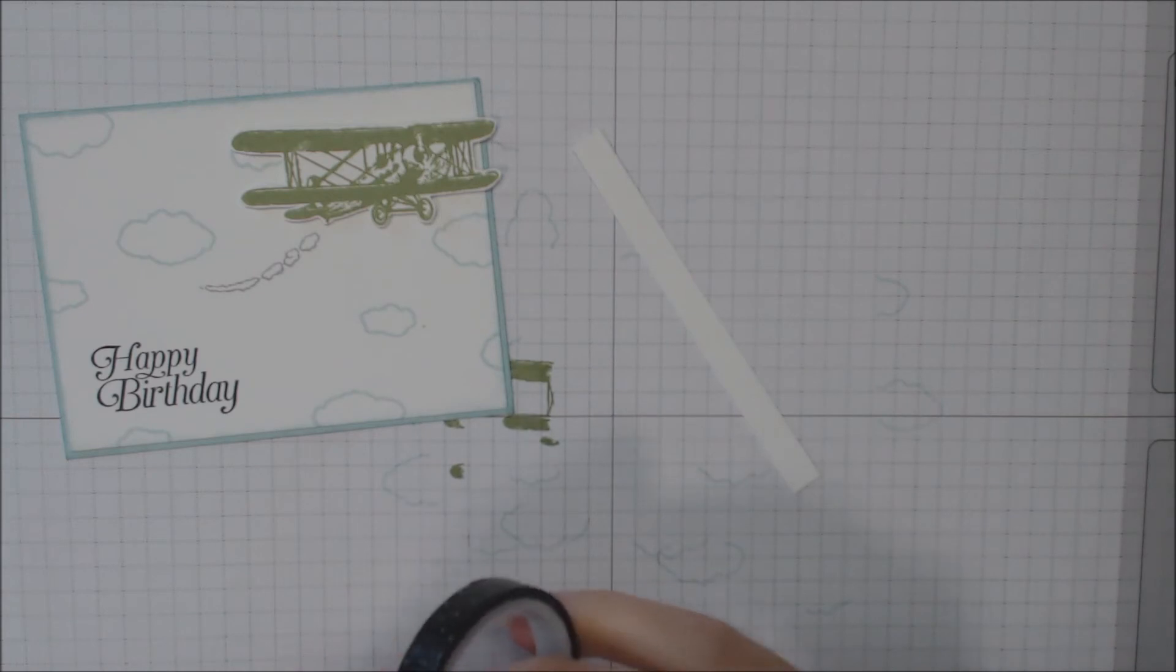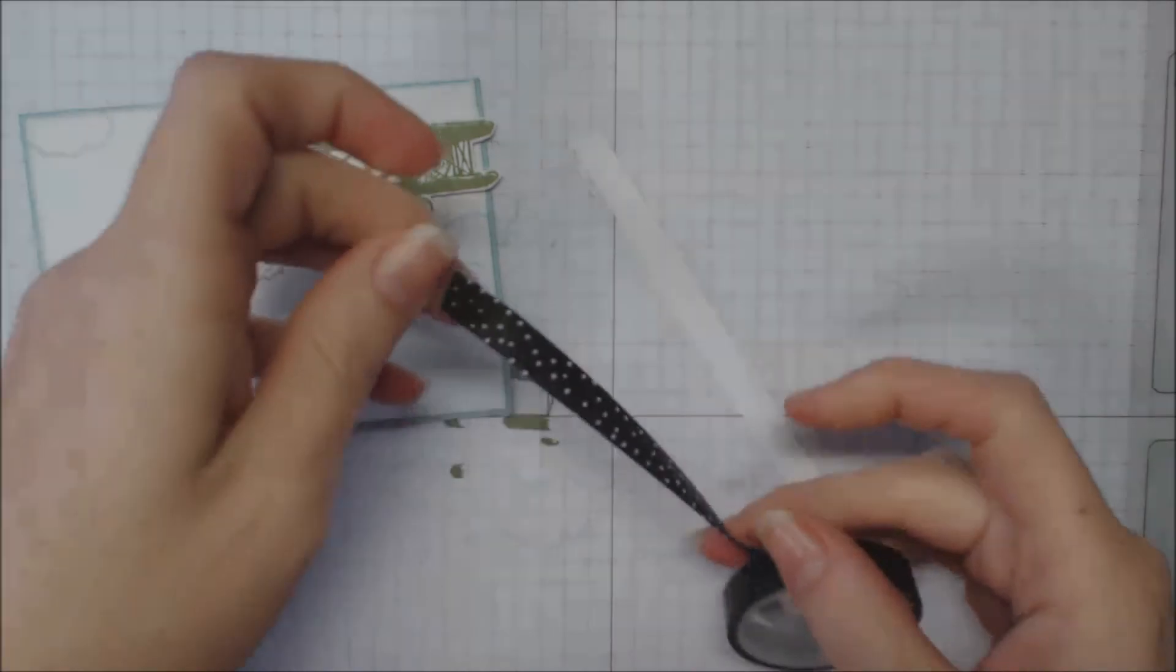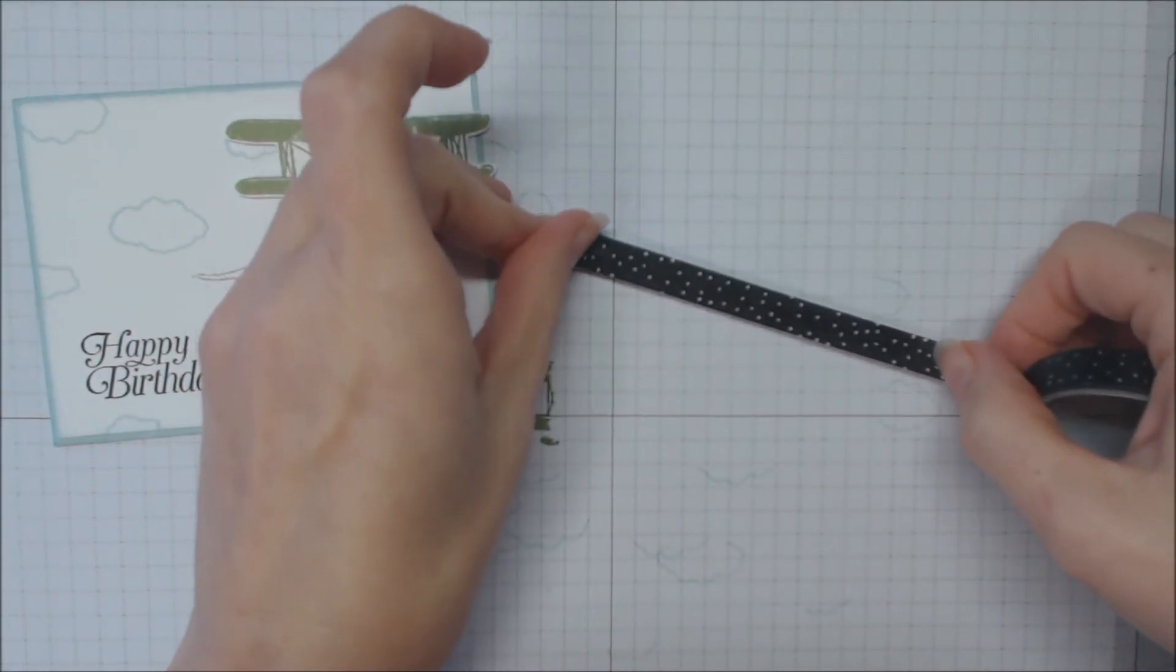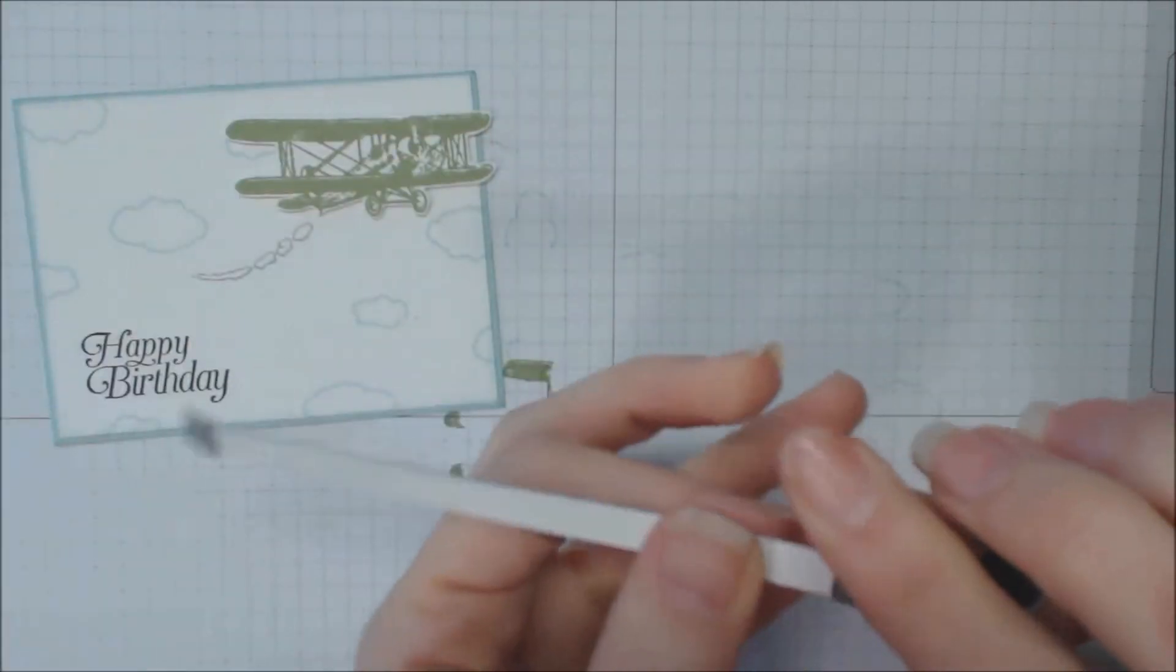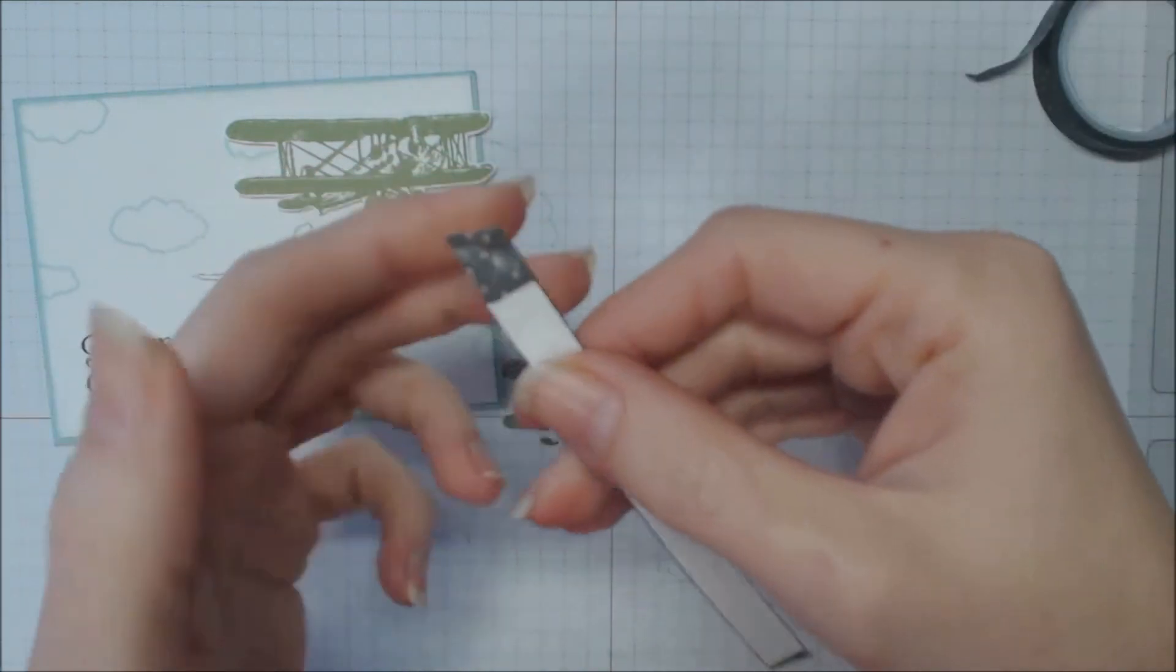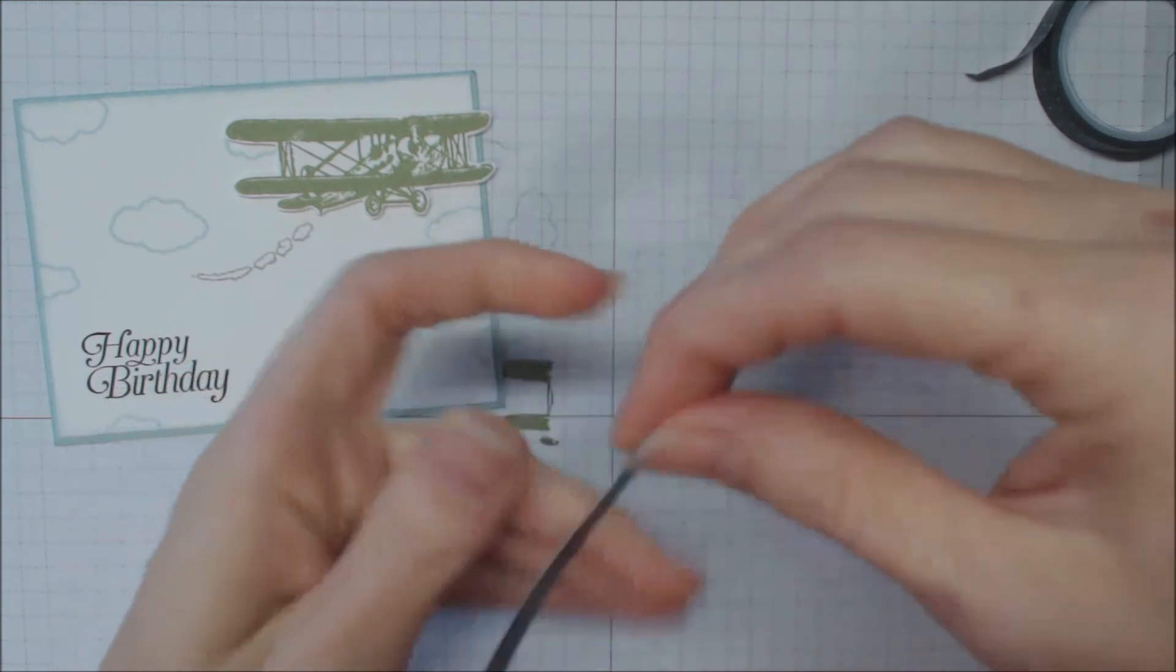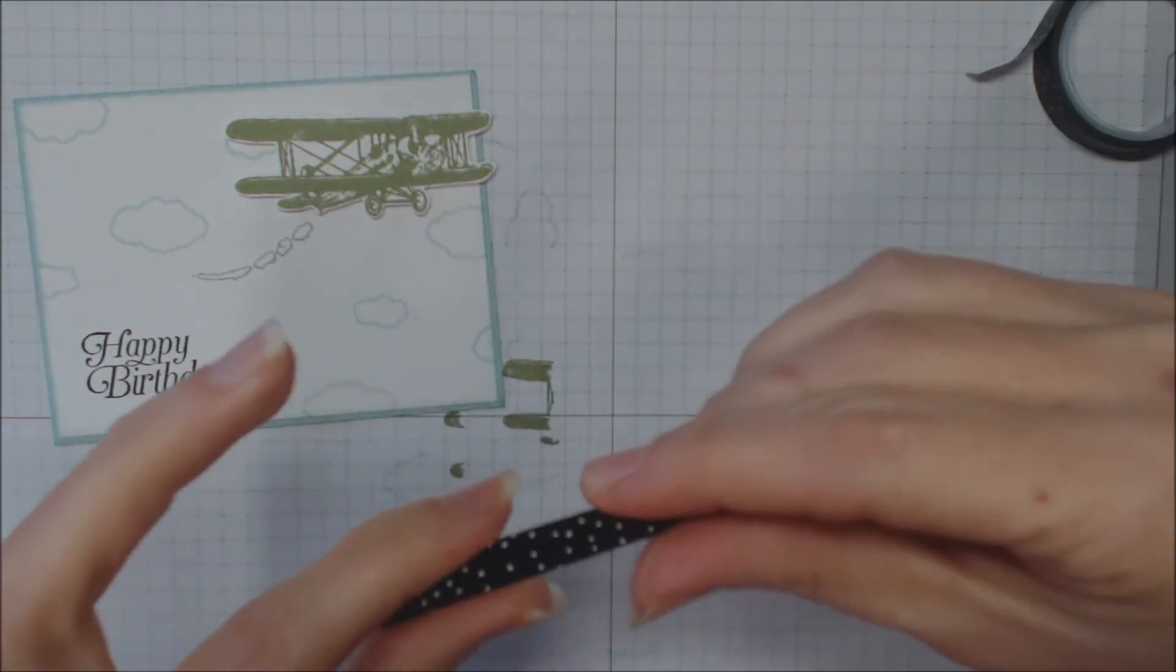I've got a three eighths of an inch piece of Whisper White by four and a fourth. And the It's My Party Designer Series washi tape. I've got the black with white dots. I'm just going to layer the washi tape on that white piece of paper. Tear off the ends, fold it over. The reason I'm doing this is because the little dots are kind of see-through. And I wanted it to be white, not to be wild wasabi.